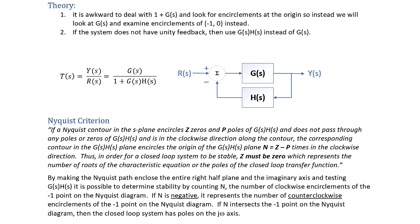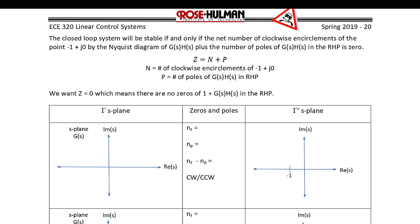By making the Nyquist path enclose the entire right half plane and the imaginary axis and testing G(s)H(s), stability is determined by counting the number of clockwise encirclements of the negative one point. If N is negative, it represents counterclockwise encirclements. If the contour intersects negative one, the closed-loop system has poles on the j-omega axis. The system is stable if and only if Z = N + P equals zero, where N is clockwise encirclements of -1+j0 and P is the number of open-loop right half plane poles.